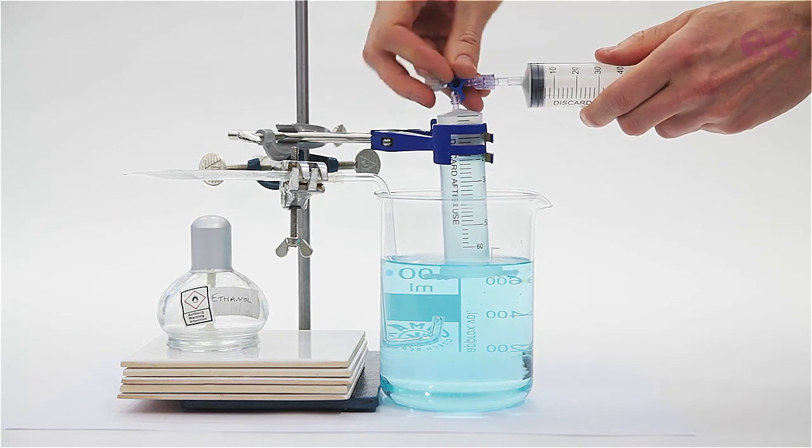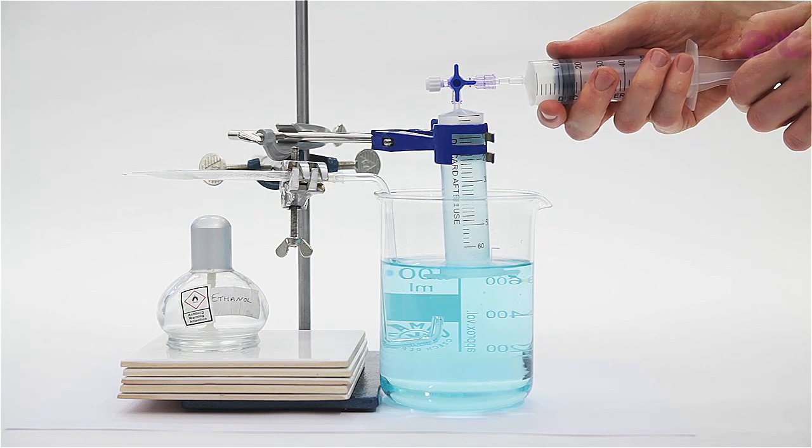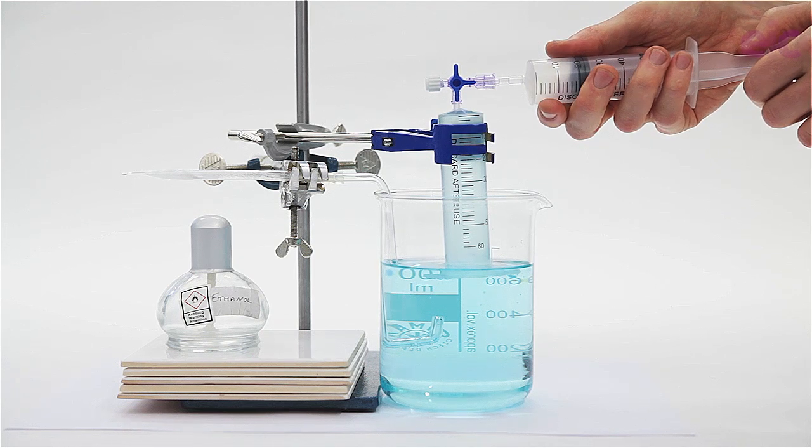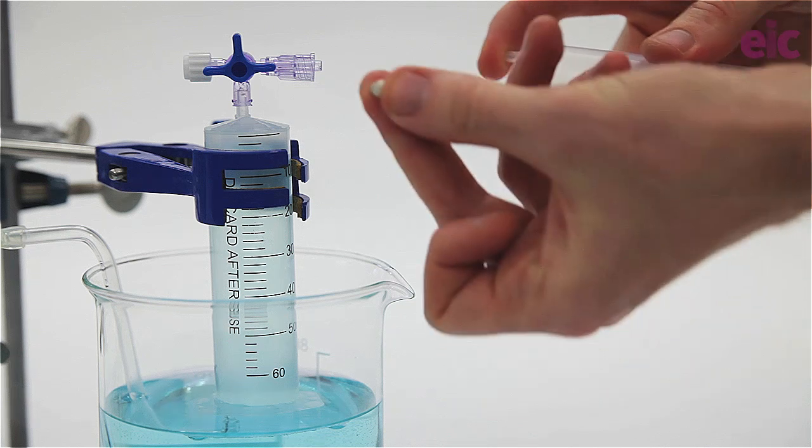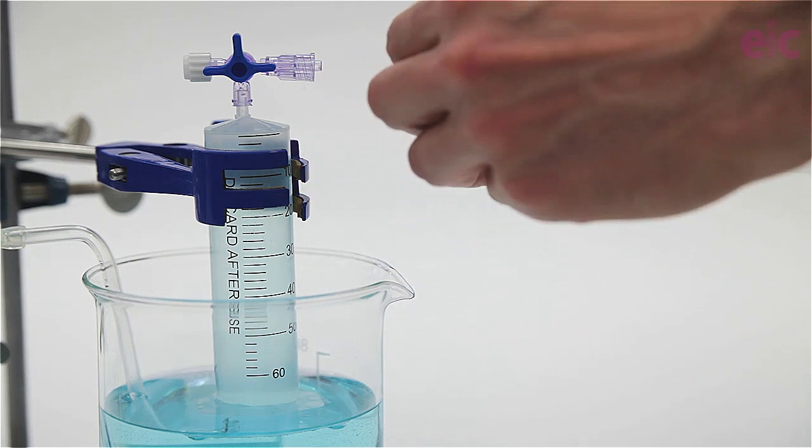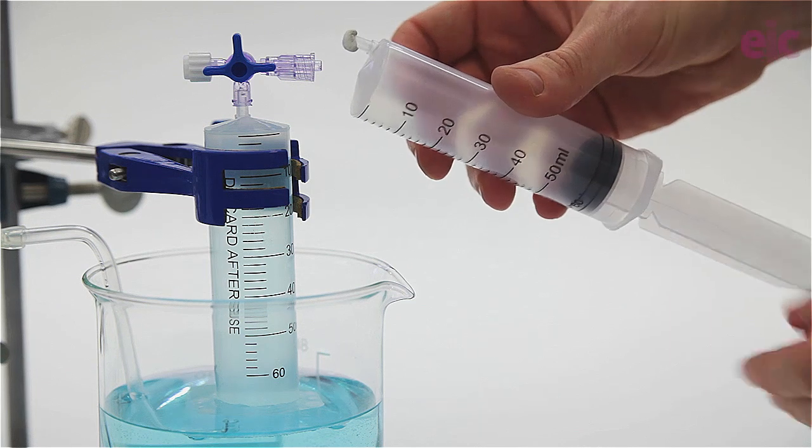I'm using three-way lure lock stopcock valves, but in principle you can accomplish the same thing with a Hoffman tubing clamp. Likewise you can get syringe caps or you can just use bits of sticky tack. The valves do make the process a little bit easier though.